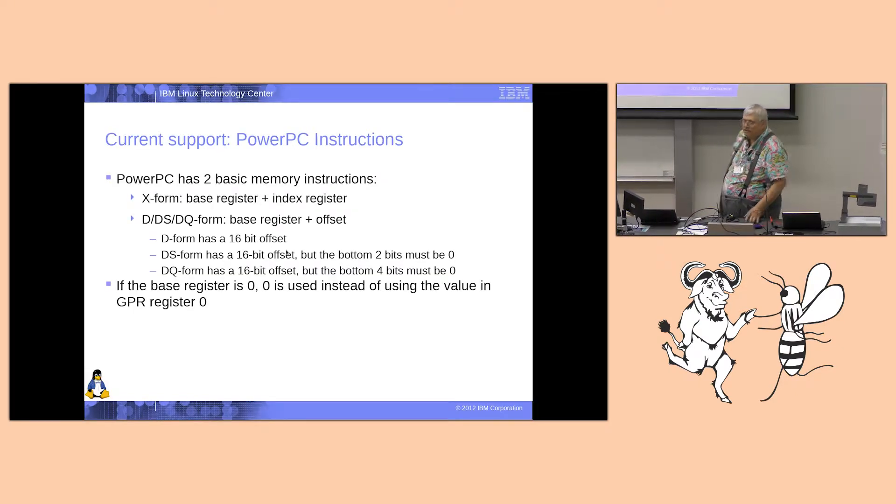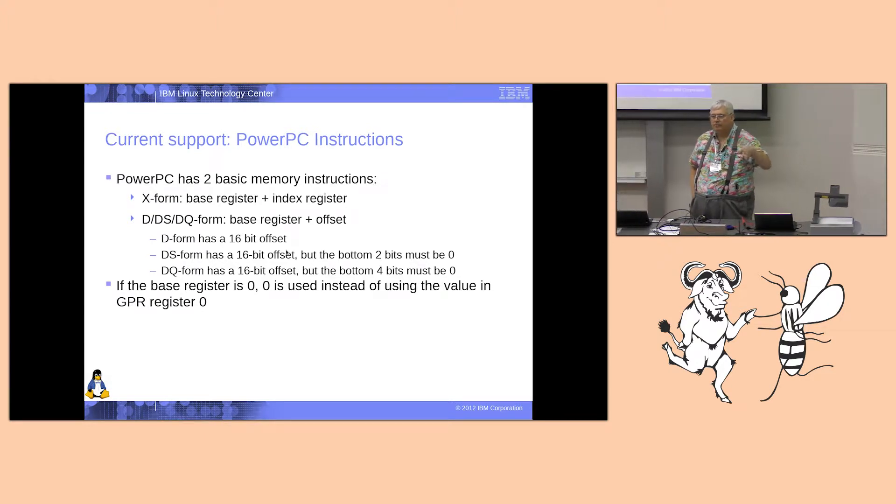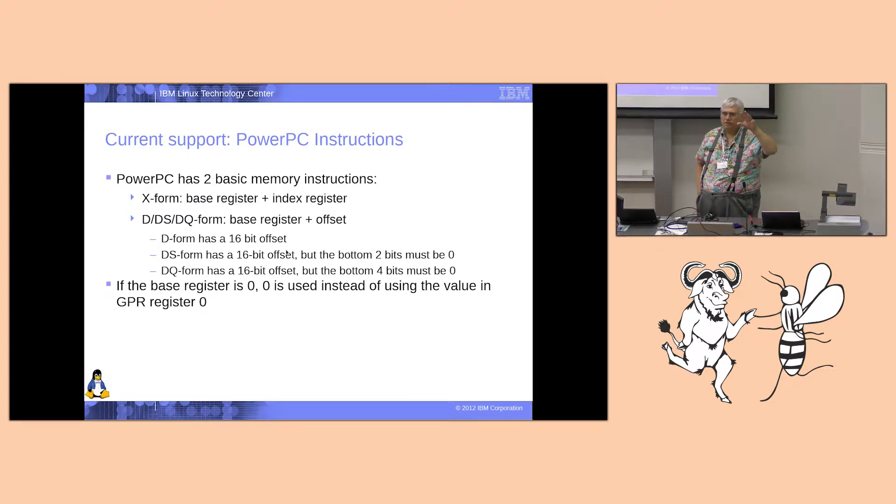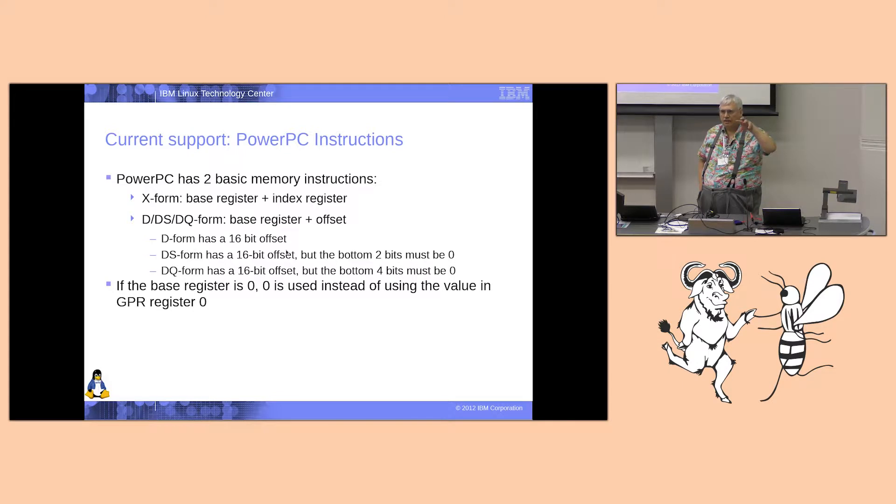Basically, PowerPC has two types of load and store instructions. X-form, which is indexed register plus register, or D-form, which is register plus offset. The original D-form had 16-bit offsets, signed 16-bit offsets.